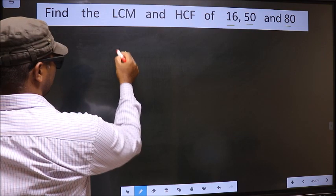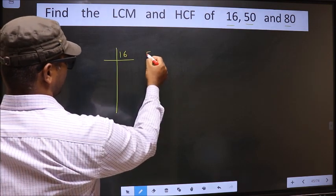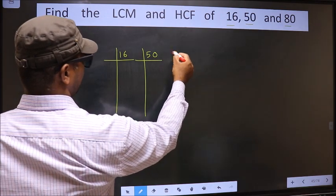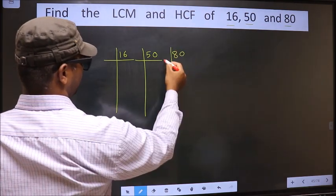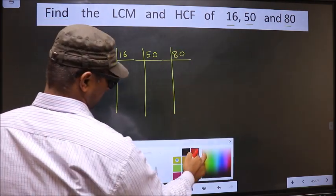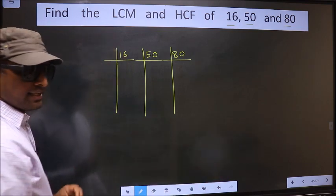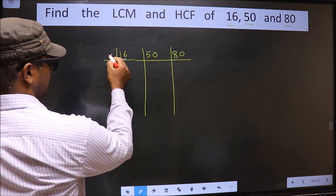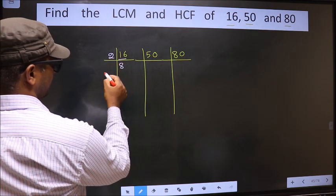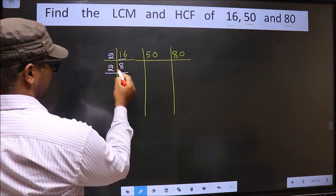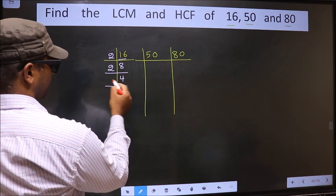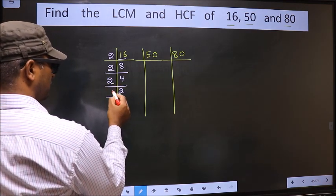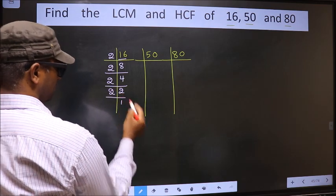Starting with 16. 16 is 2 times 8. Now 8 is 2 times 4. 4 is 2 times 2. Now we have 2, and 2 is a prime number, so 2 times 1 is 2. So 16 = 2 × 2 × 2 × 2.